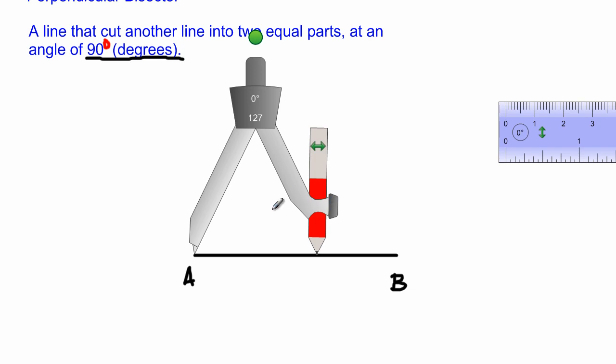Remember your construction lines should be a bit duller than your line segment AB, because lines that are drawn with a compass should be faded lines.